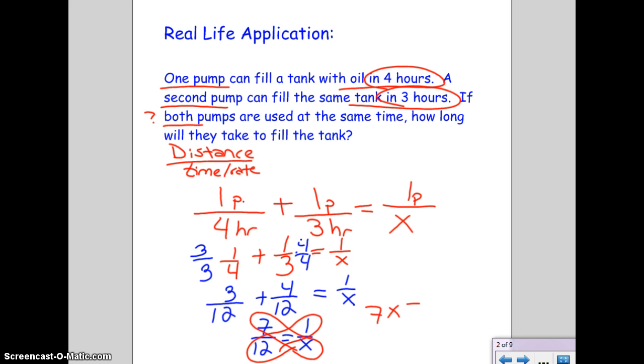If I cross multiply, I'll get seven x is equal to twelve, which means that x is equal to twelve over seven. So if I think about twelve over seven, that's about one, close to two almost. So basically, if both pumps are working, it takes closer to two hours, which is a lot less time than if I just had one pump going separately. So twelve over seven, close to two, one point something, and that takes a lot less time, that's hours, if both pumps are working instead of just one at a time.